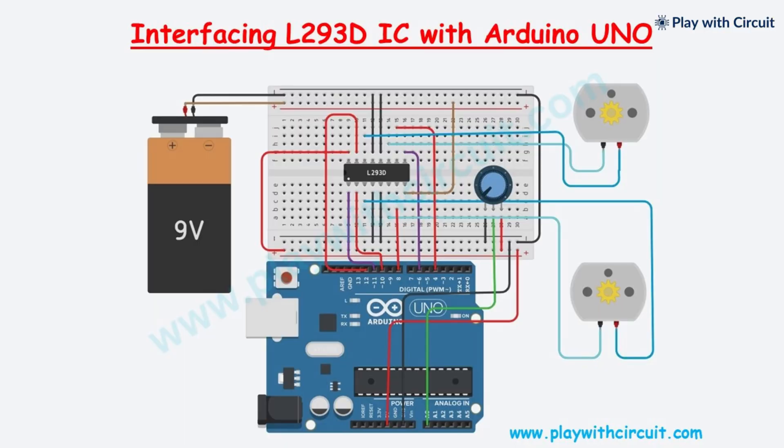Before we dive into the wiring let's take a look at the circuit diagram. I have connected 2 DC motors with the IC. I will be using potentiometer for controlling the speed of DC motors. Let's move to the connection part.